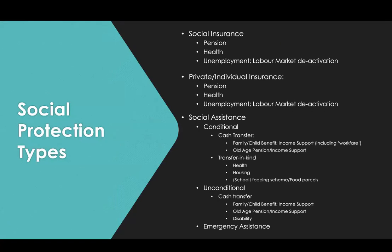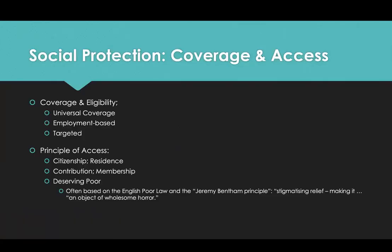As discussed in Modules 2 and 3, coverage and eligibility can be universal, employment-based, or targeted. Targeting itself may be through means tests or proxy means tests, including the use of communities to select those who will be beneficiaries. Access may be based on prior history of contribution or membership of the scheme. A vital aspect of a targeted scheme historically has been the principle of the deserving poor — it is not enough that people are poor in order to qualify; they have to be deserving in that they are otherwise not able to provide for themselves.